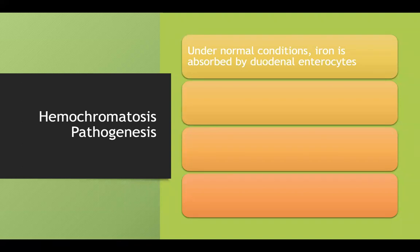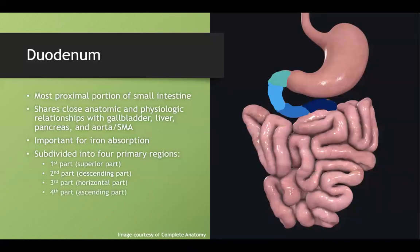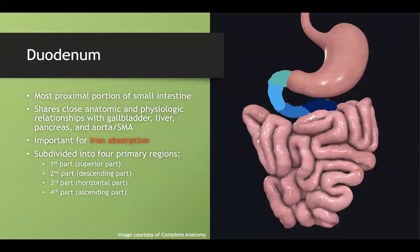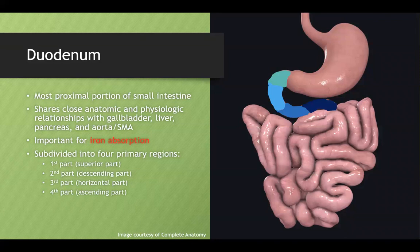I want to discuss hemochromatosis pathogenesis. We've talked about this in the small intestine lecture where I showed you how normal iron absorption works. So we'll go over that again here. Normally, iron is absorbed by our duodenal enterocytes. The duodenum is very important for iron absorption.